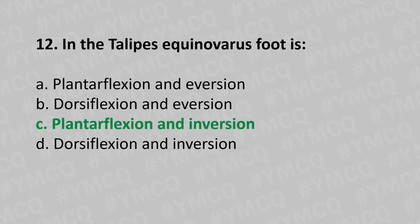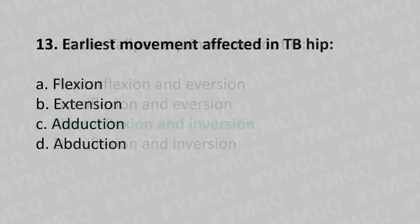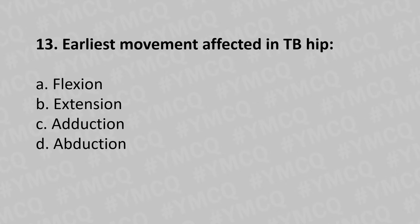Moving to our 13th question: the earliest movement affected in TB hip is — option A flexion, option B extension, option C adduction, option D abduction. And the answer is option A flexion.